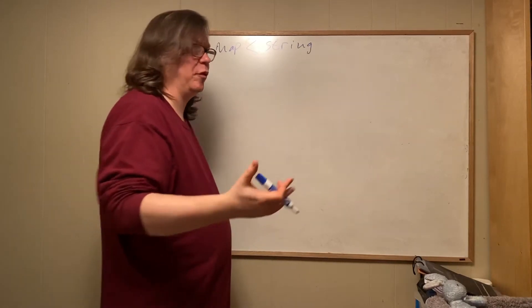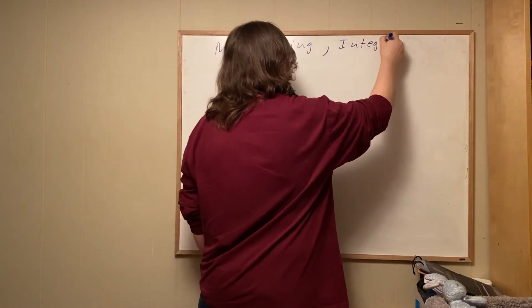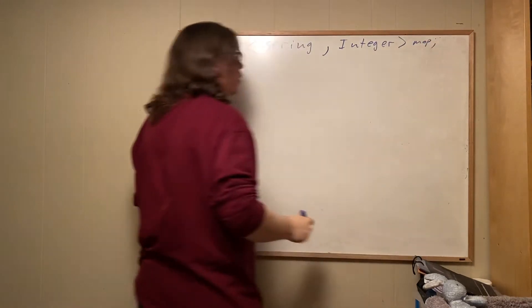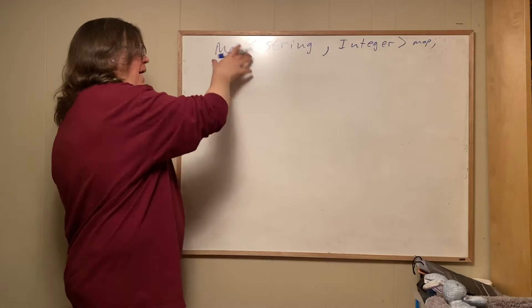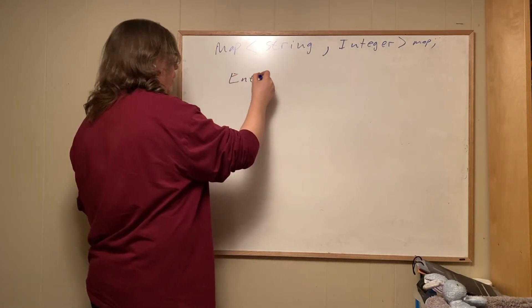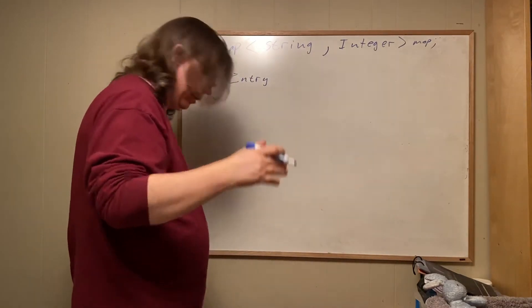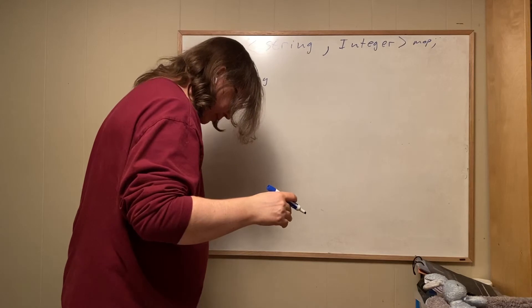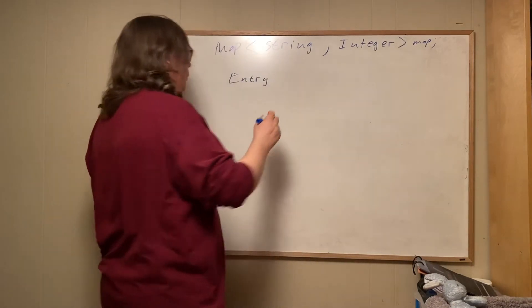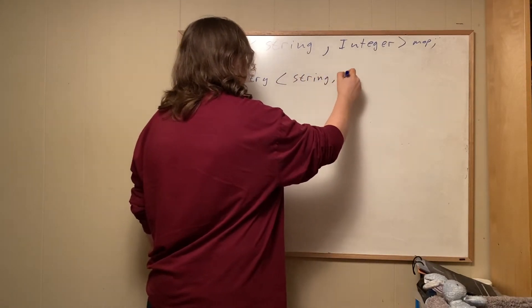So let's say this is a string and an integer. So the structure inside of the map class, there's this other class called an entry. And we'll talk about classes inside of classes coming up in another set of lessons. So there's an entry with, in this case, it will be of type string and integer.